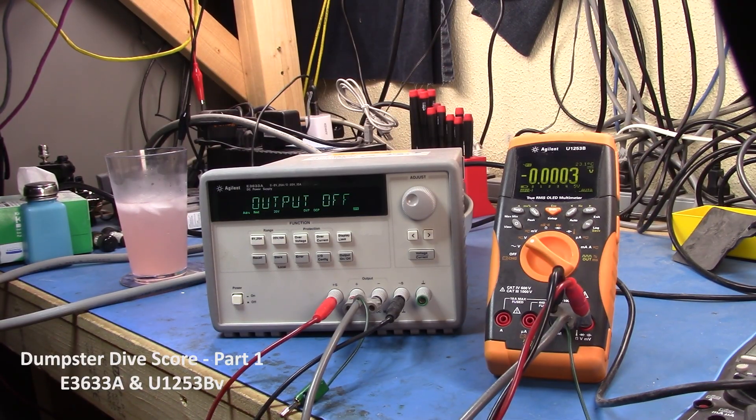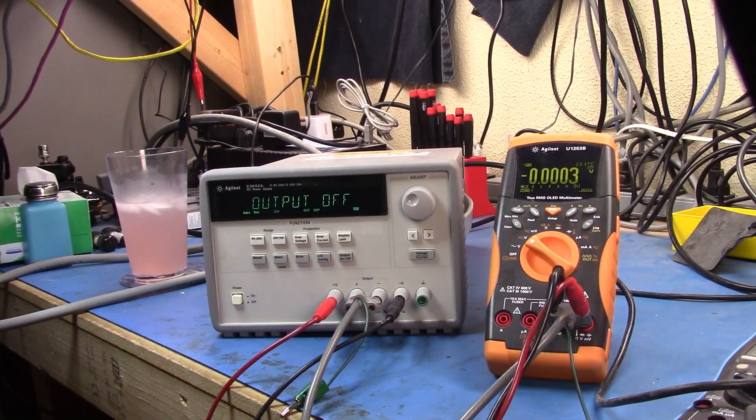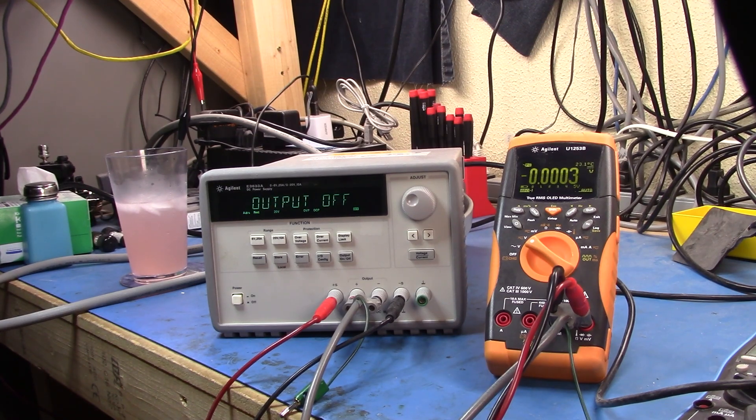I scored a bunch of stuff, some 3335A's, some 8663's, 3585A, some 33250's. A bunch of them seem to be working, a bunch seem to be broken. They've all been rejected or retired from Calibration Lab. So I managed to score them from the dumpster, and we'll go through some of them in the next couple of videos.